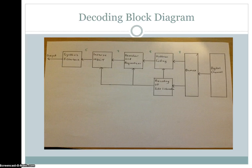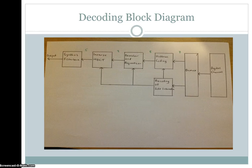In the decoding block diagram, the digital channel comes in and goes into a demultiplexer, which feeds simultaneously into Huffman decoding and the decoding of side information. The side information is used to keep track of all the bits going in and out. Everything then goes into a descaler, then into an inverse MDCT, then into a synthesis filter bank — meaning the signal is put back together — and then into the output.